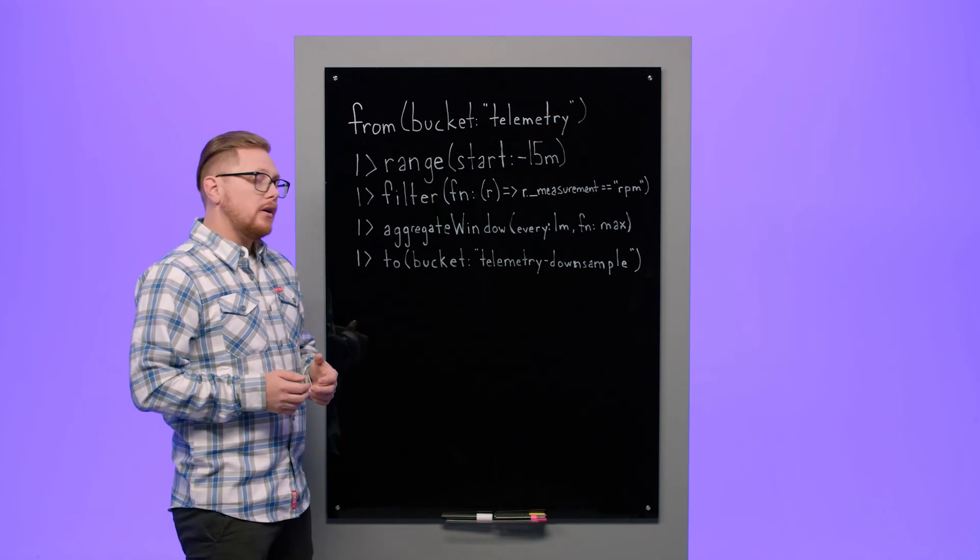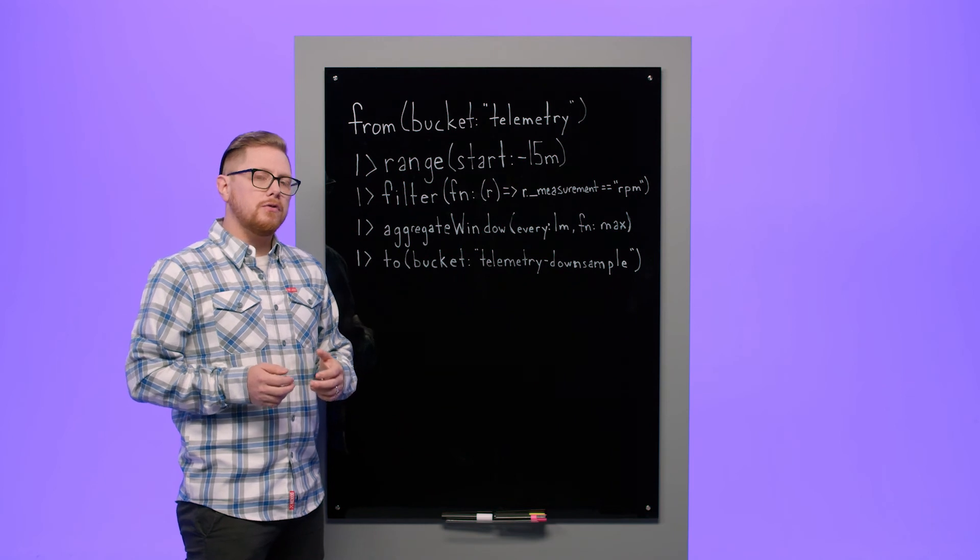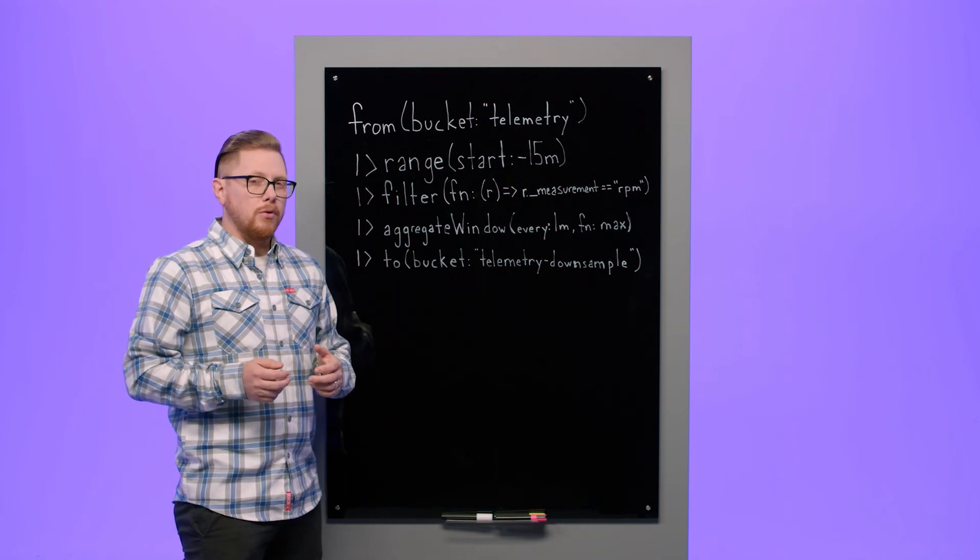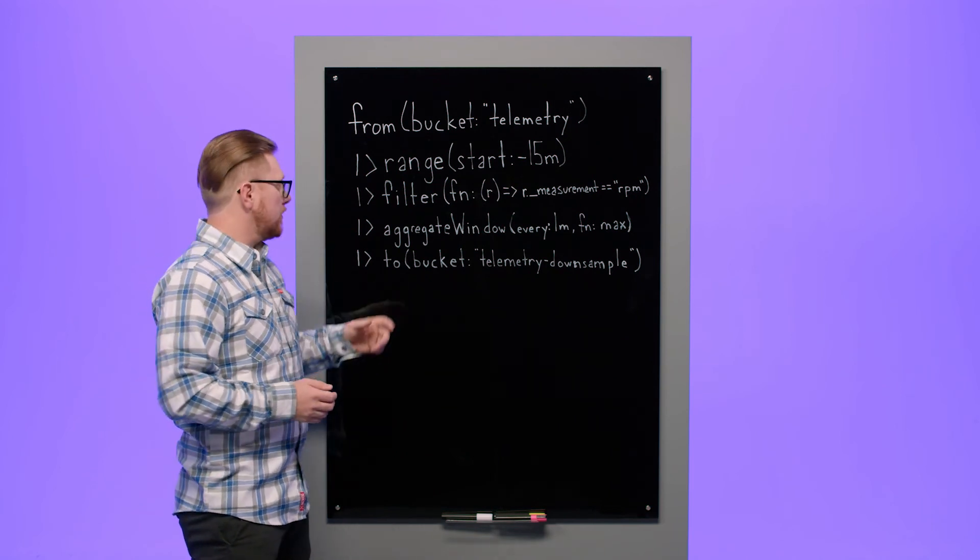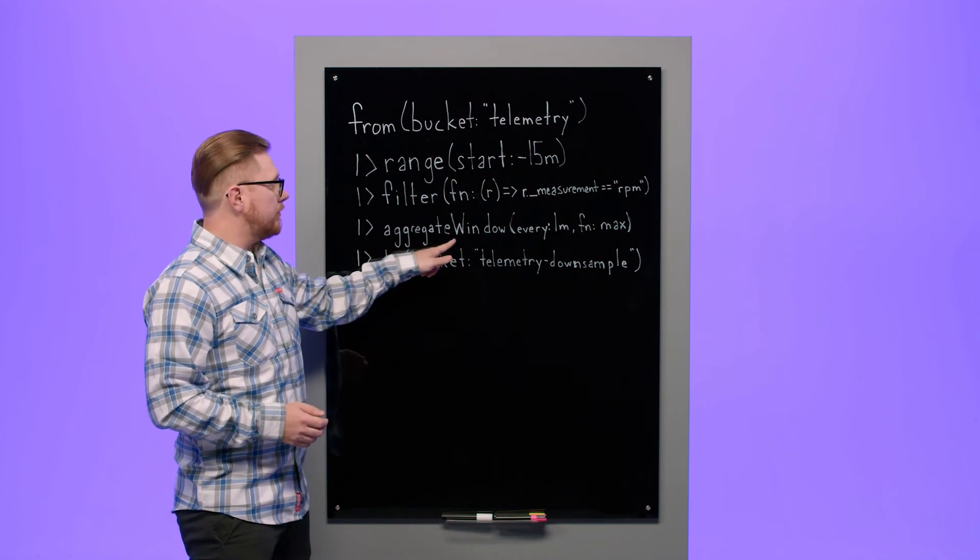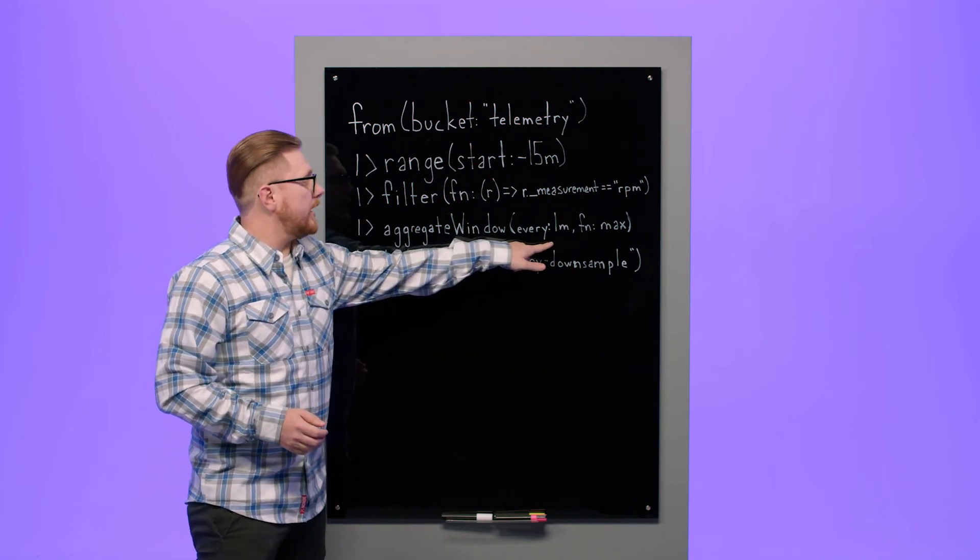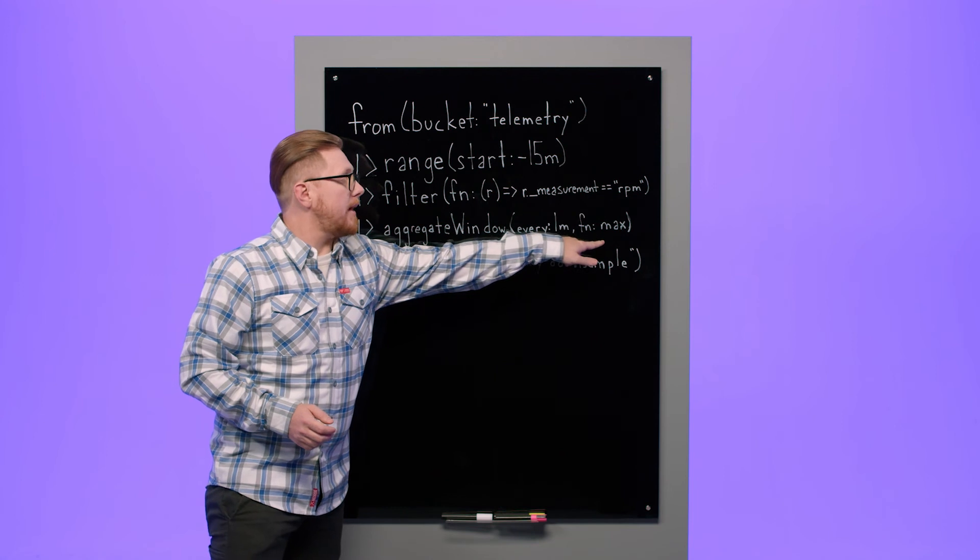In this case, let's look at the max value every minute over our 15 minute period for the measurement RPMs. We'll use that with the aggregate window function, and we'll tell it we want it every one minute, give us the max.